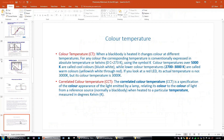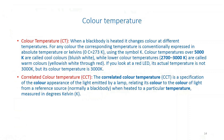Returning to the color temperature versus CCT slide: one important counterintuitive point — color temperatures above 5,000 K are called cool colors (bluish-white), while lower color temperatures around 3,000 K are called warm colors (reddish). So 'warm' light actually has a lower color temperature number, and 'cool' light has a higher color temperature number.